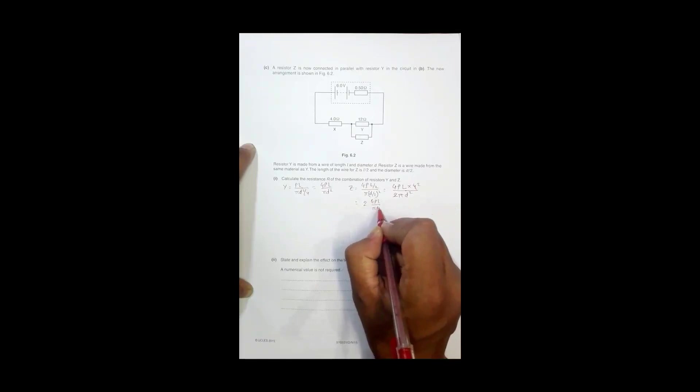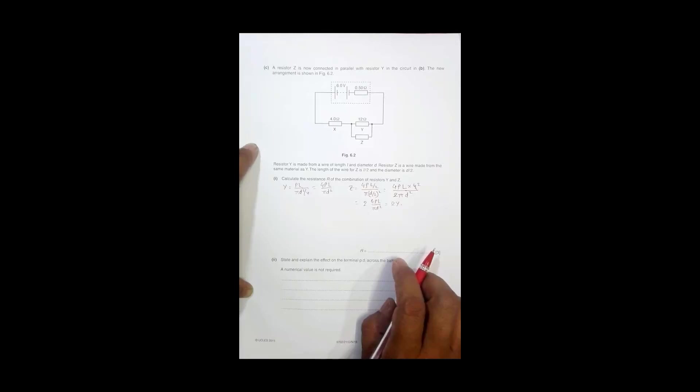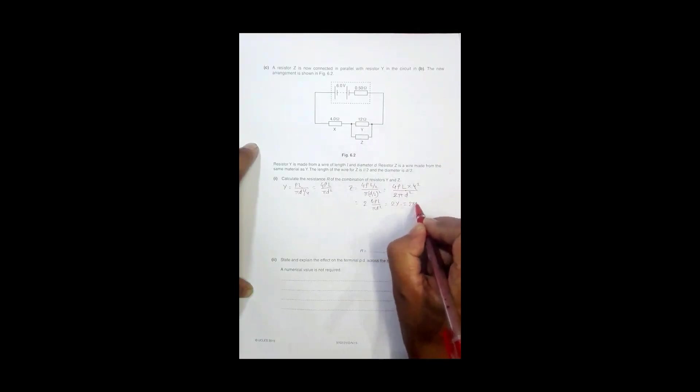Equal to 2Y. So resistance of Z is equal to twice the resistance of Y. So that's equal to, Y is equal to 12, so it is 2 into 12 equal to 24 ohm.